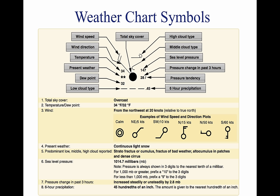4. Sea level pressure — given in three digits to the nearest tenth of a millibar (MB). For 1,000 millibars or greater, prefix a 10 to the three digits; for less than 1,000 millibars, prefix a 9. 5. Pressure change tendency — pressure change in tenths of millibars over the past three hours, depicted directly below the sea level pressure. 6. Precipitation — a record of precipitation that has fallen over the last six hours to the nearest hundredth of an inch.